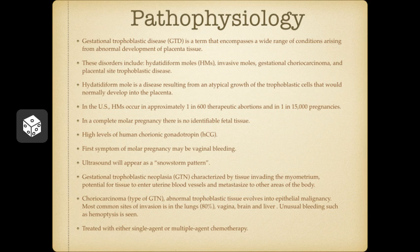The hydatidiform mole is a disease resulting from an atypical growth of the trophoblastic cells that would normally develop into the placenta. It starts at the time of fertilization due to a defective union of the sperm and ovum, which causes an aberrant proliferation of trophoblastic tissue that rapidly fills the uterine space. Placental villi fill with fluid and become edematous grape-like structures.